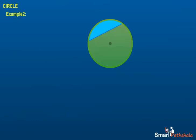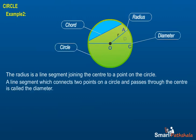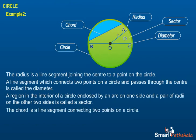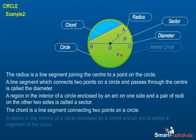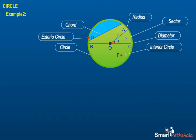Example 2: Draw any circle and mark: A. Its center, B. A radius, C. A diameter, D. A sector, E. A segment, F. A point in its interior, G. A point in its exterior, H. An arc.